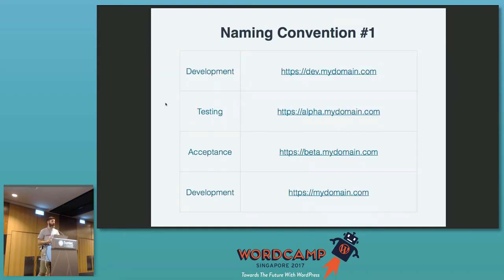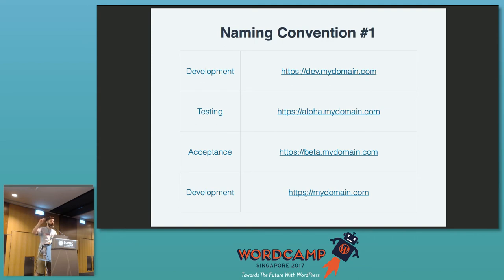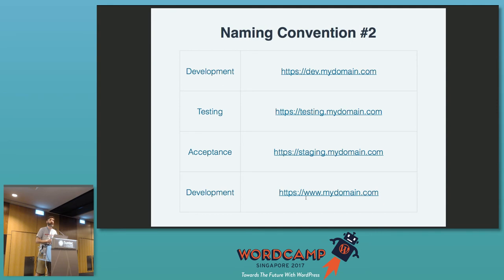There are a couple of naming conventions I developed over time. You have development, testing, acceptance, production. I usually use the subdomain 'dev' for development, 'alpha' for testing, 'beta' for acceptance. I don't really use 'www' because it's simply a subdomain — though some customers like it because it looks more traditional and like a real website. I had a few customers who told me there's a 'www' missing. Well, in that case you just add a 'www'. An alternative naming convention also uses 'dev' for development, 'testing' for testing, and 'acceptance' or 'staging' for the acceptance environment.